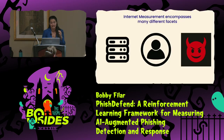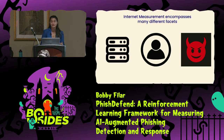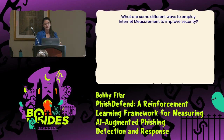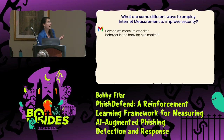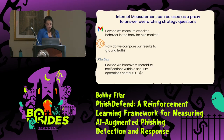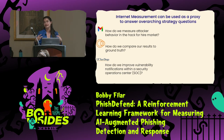The nice thing about internet measurement is that it can contain a lot of different facets. We can measure server behaviors, we can measure people — what are they doing — or we can measure the attackers who are trying to break into servers. I'm going to concretize this with three examples of how we can actually use internet measurement to improve security. In my own work, I've asked: how do we measure attacker behavior in the hack-for-hire market? How do we compare our results to ground truth when you're an internet-wide scanning engine? And how do we improve vulnerability notifications within an SOC? Internet measurement is a proxy to answer these overarching strategy questions to try and help better the world.